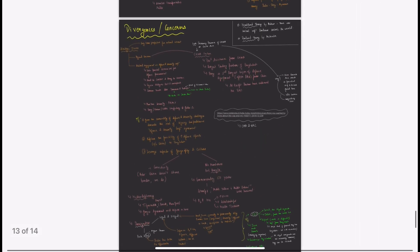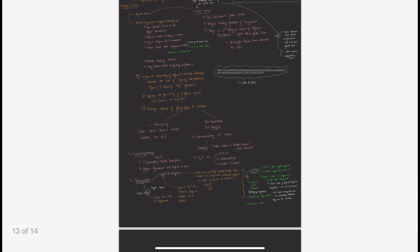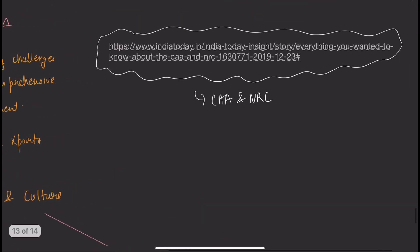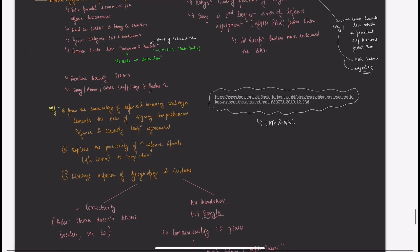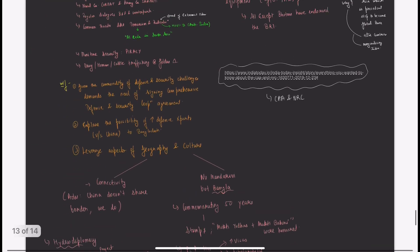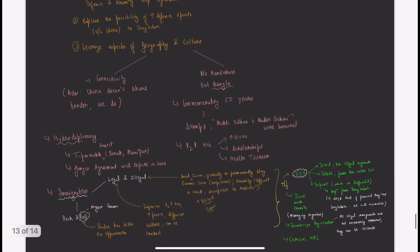That's all for India-Bangladesh topic. Keep linking current affairs points. I've given a link from India Today to know about CAA-NRC issue. You can search in Google. We'll discuss this in the politics section. Next we'll take India-Bhutan or India-Nepal, covering it in one or two sessions. Thank you.